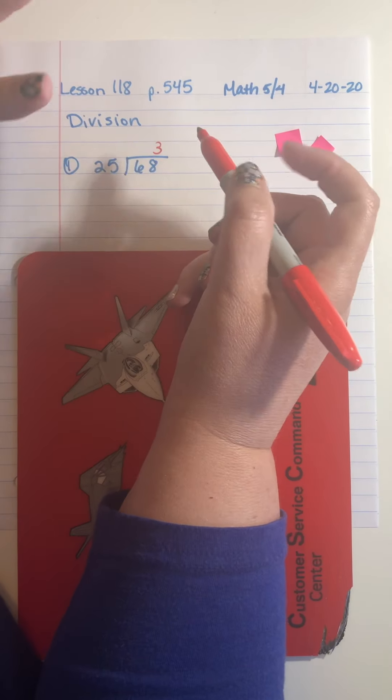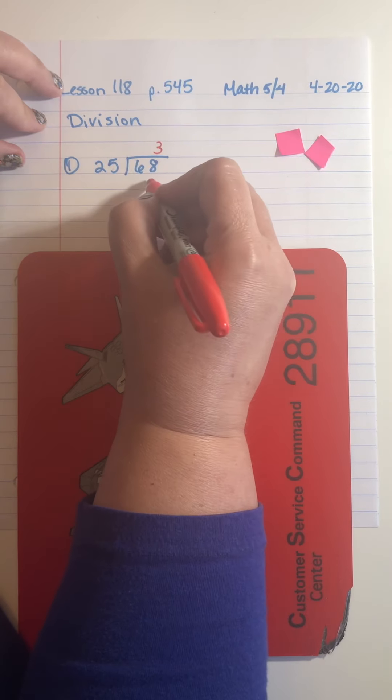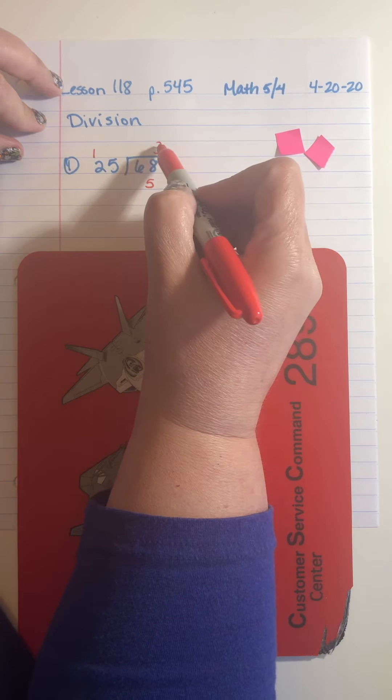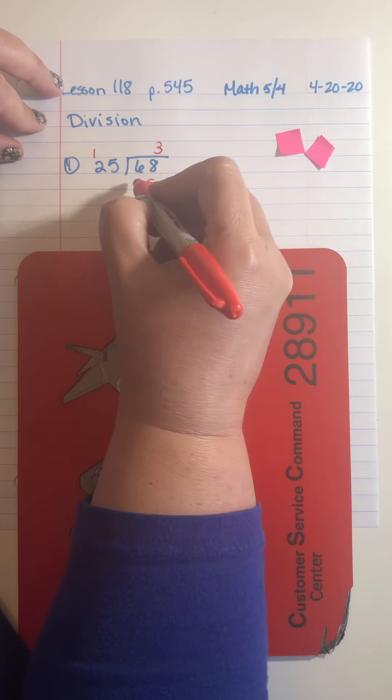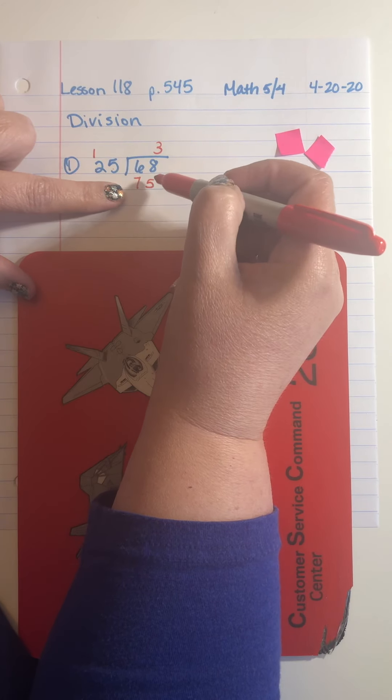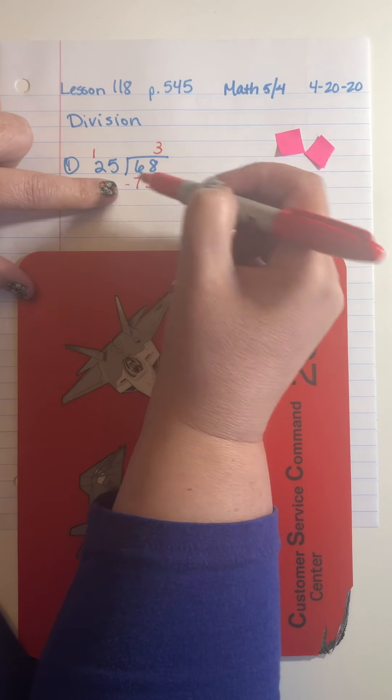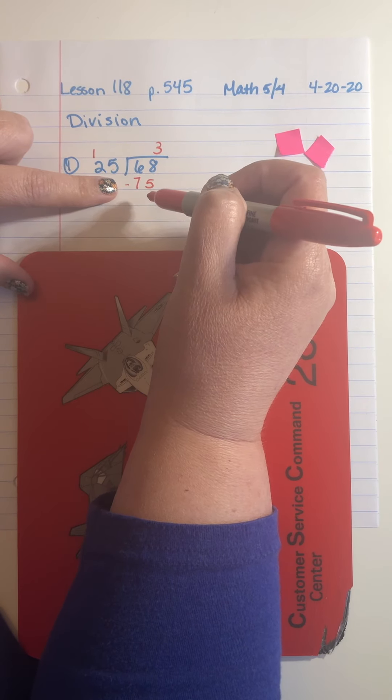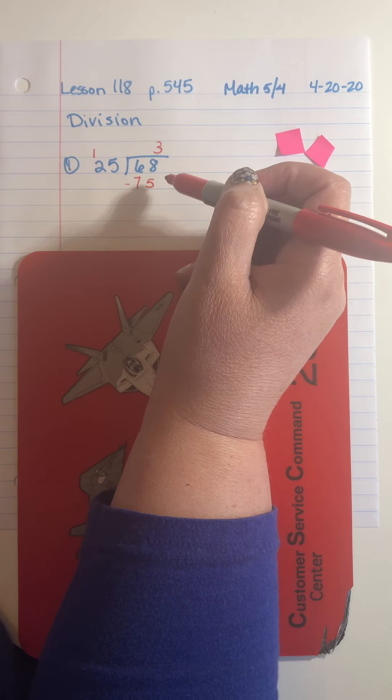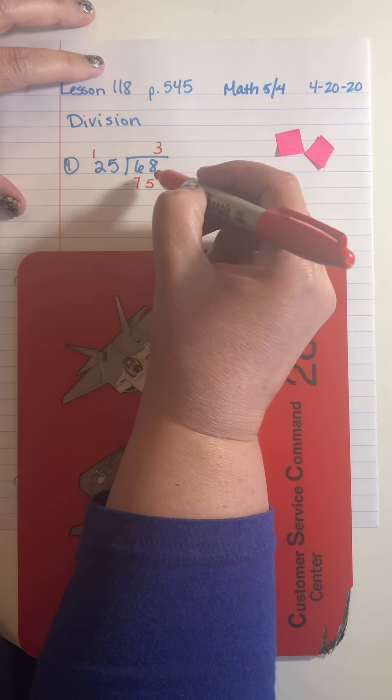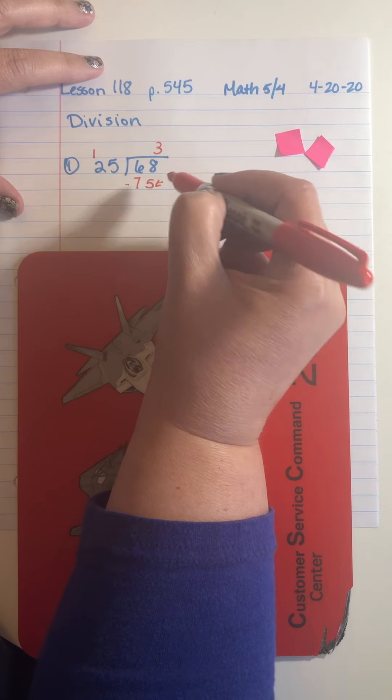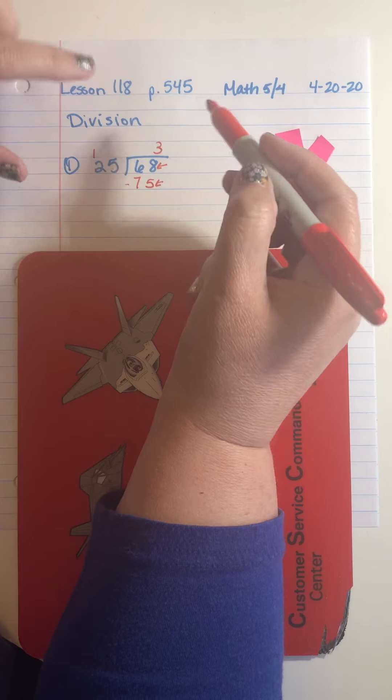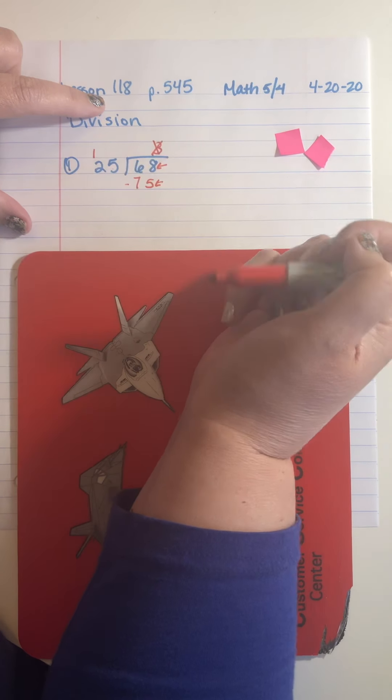So now my second step is to multiply. Three times five is 15. Carry my one forward. Three times two is six plus that one is 75. Now I have to stop and look and say, okay, so my next step is to subtract, but 68 minus 75 is not something I can subtract and get right. So I went too high. When this number comes out higher than your original number, it doesn't work. So we have to go back and we know it's not three.